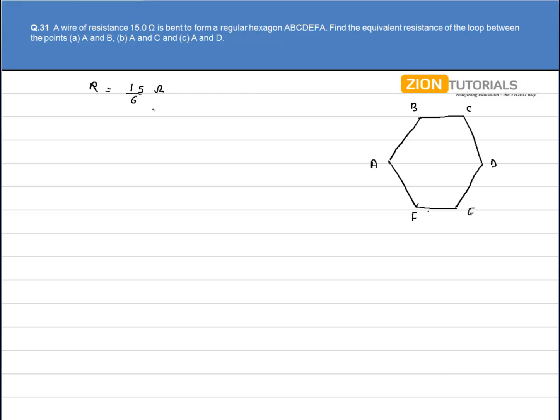First, to calculate the equivalent resistance between point A and B. So in this case, we have 5 resistances in series and that is in parallel with a single resistance R.